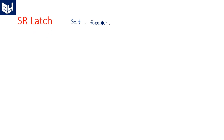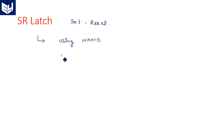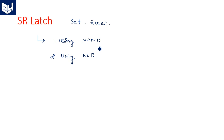The SR latch is a Set and Reset latch. It can be made using two types of gates: NAND gates or NOR gates. So we can design an SR latch using NAND gates and an SR latch using NOR gates. In the CMOS design of the SR latch, we will first take the basic gating circuit for the SR latch using NOR gates and NAND gates.